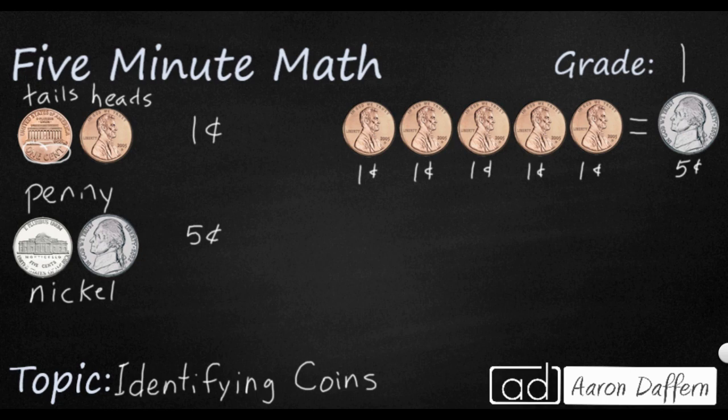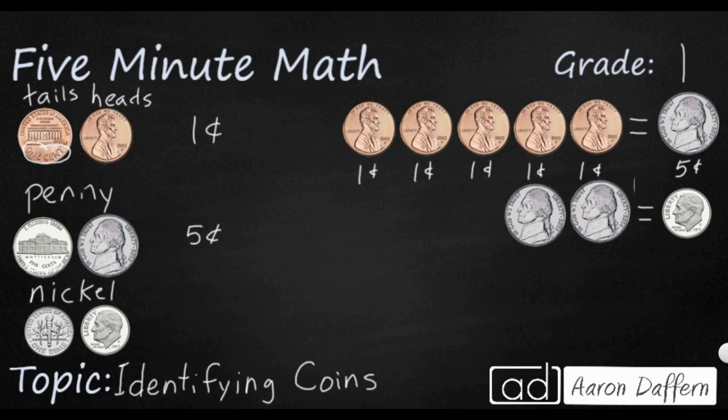Now, what happens when you get two nickels together? Well, that makes a dime. So over here on the right, you see I've got two nickels, and these are each worth five cents. And so if I count by fives, five, ten, I'm going to get my dime. Dime is our next coin. It's worth 10 cents. And over on the left, you see the heads and the tails. And so I'm going to write dime right here to the side, and it is worth 10 cents.